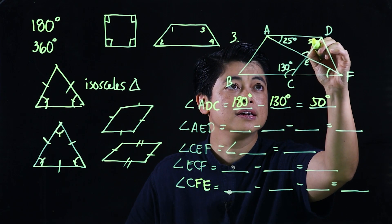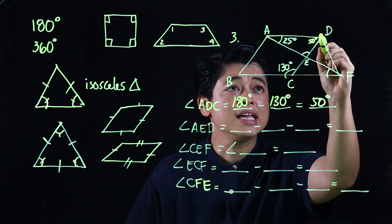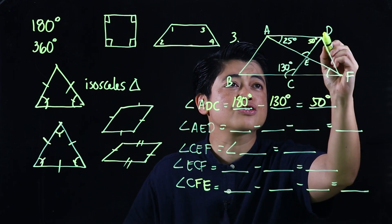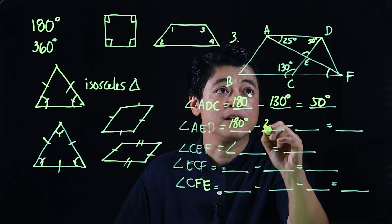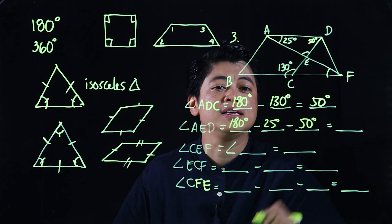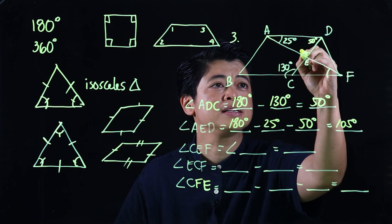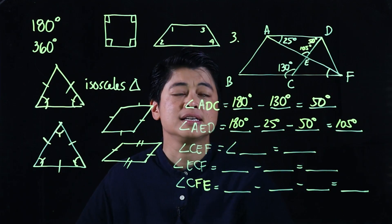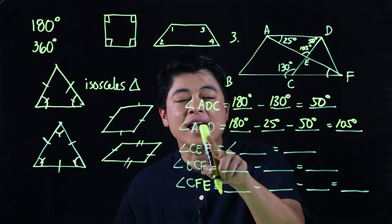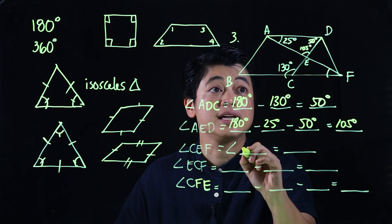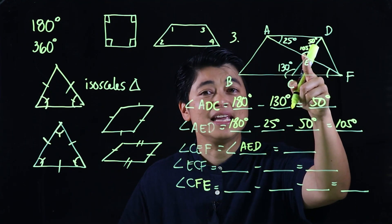Now for angle AED, we look at that triangle. That's 180 degrees minus 25 degrees minus 50 degrees, which gives 105 degrees. Angle CEF is equal to angle AED because those are vertical angles, so angle CEF is also 105 degrees.